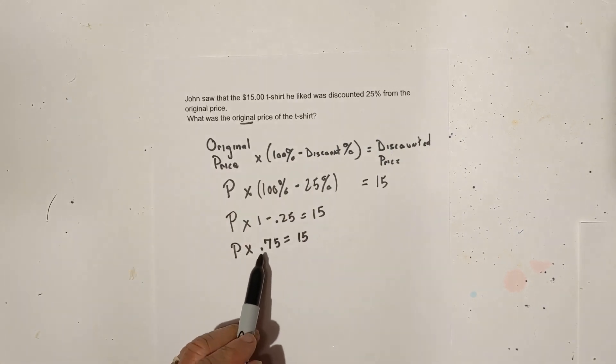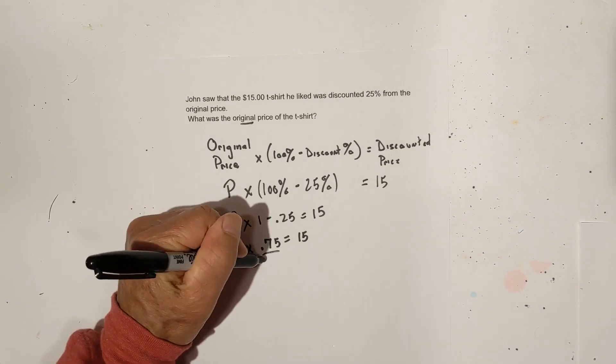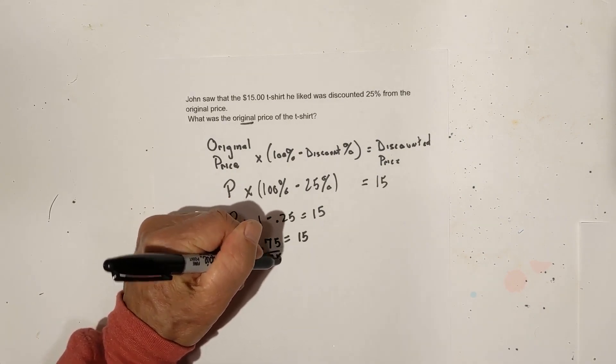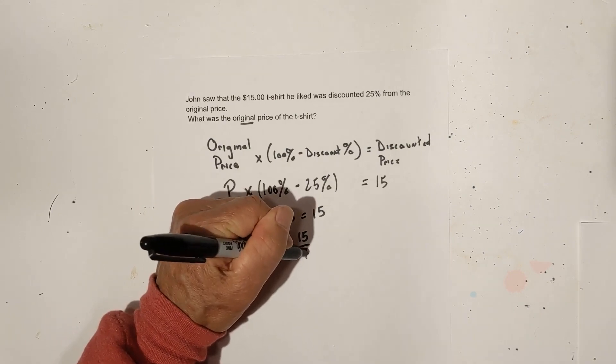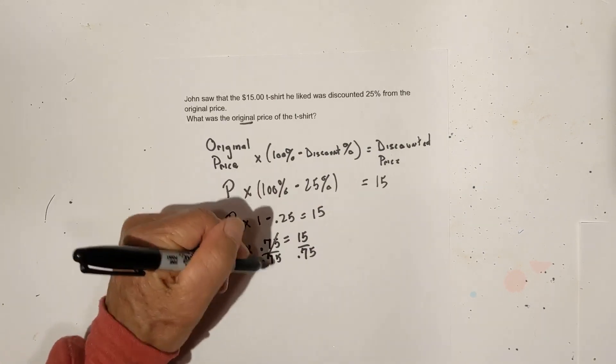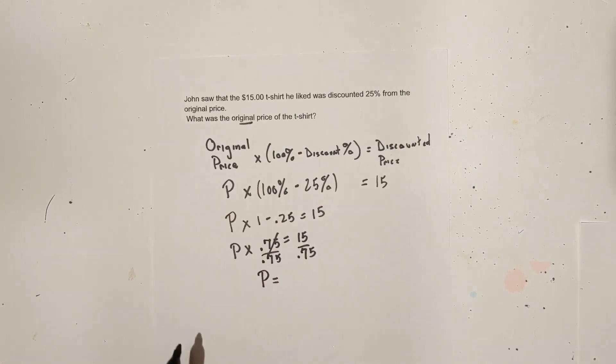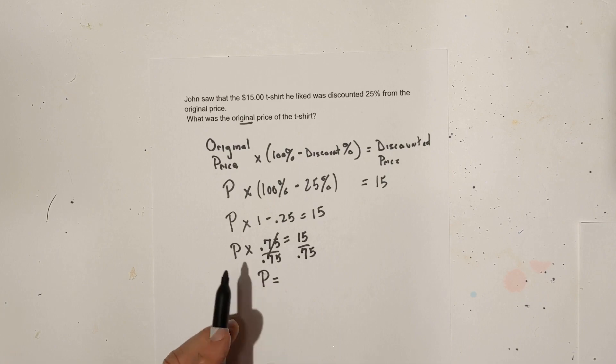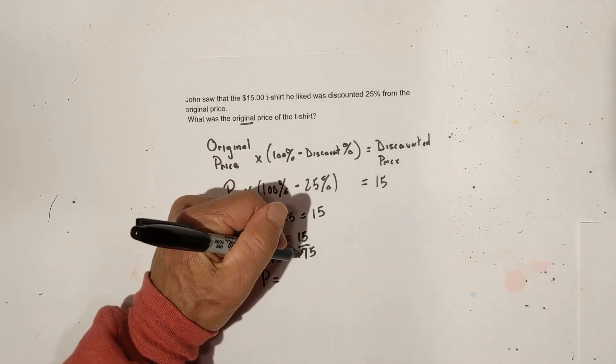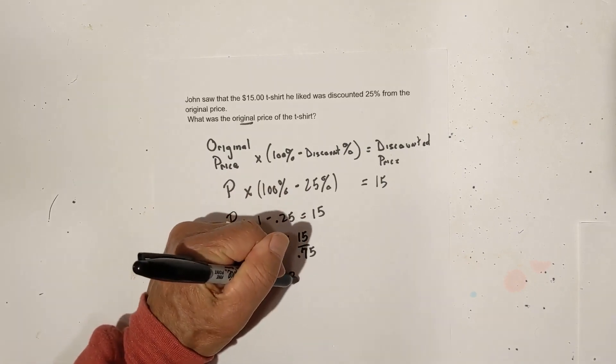Now what we do is we have P times 1 minus 0.25 is 0.75 equals 15. Remember, whenever you have an equation to get rid of multiplication, you can divide. So I'm going to divide both sides by 0.75. These cancel, and then we have the original price equals 15 divided by 0.75.